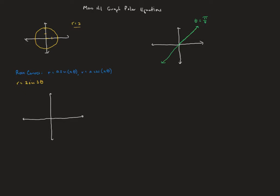Now let's talk about rose curves. Rose curves have the form r equals a·sin(nθ) or r equals a·cos(nθ). If n is odd, that is the number of petals on the rose curve. If n is even, we will have 2n petals — twice as many.